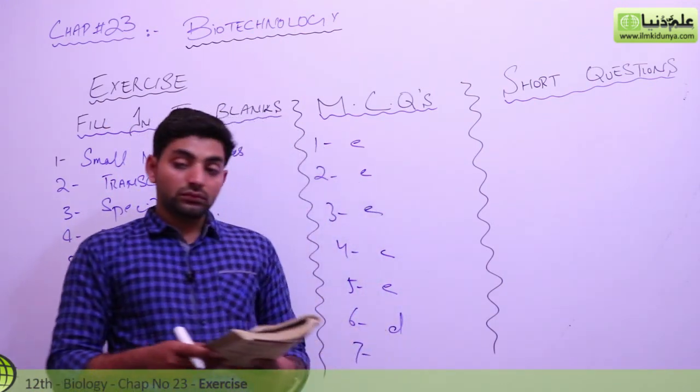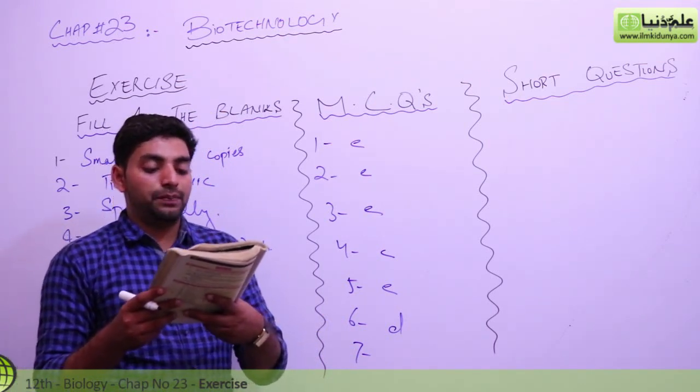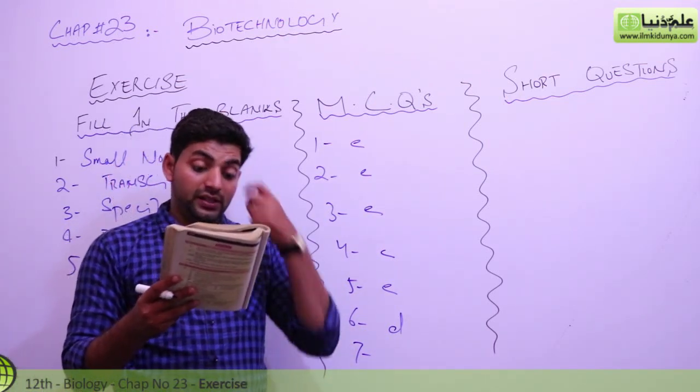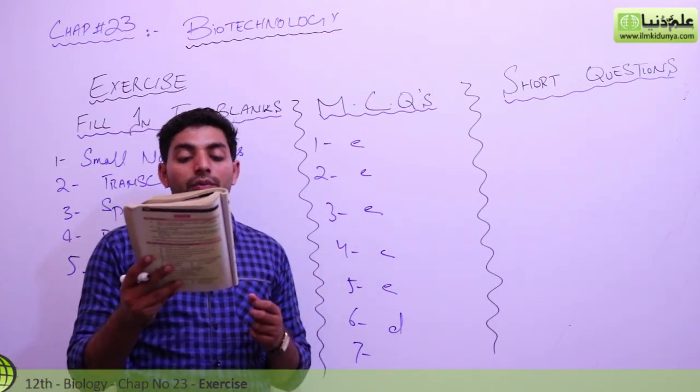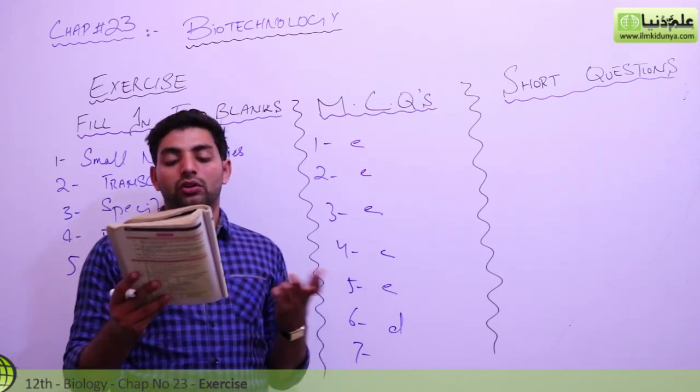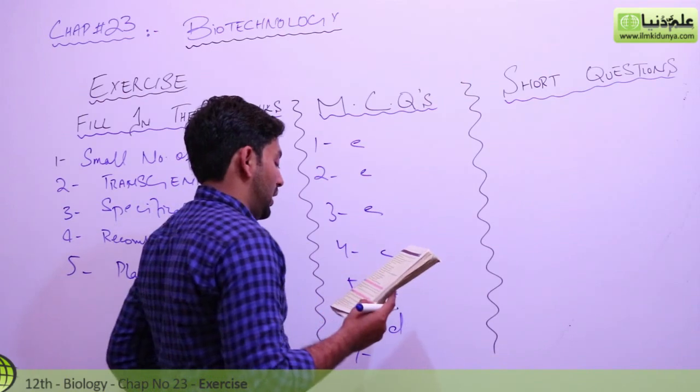Seventh one: which of these is incorrectly matched? Protoplast-plant cell engineering, RFLPs-DNA fingerprinting, DNA polymerase-PCR, DNA ligase-mapping human chromosomes. So DNA ligase-human chromosome mapping, D is not the correct option. So the answer is D.